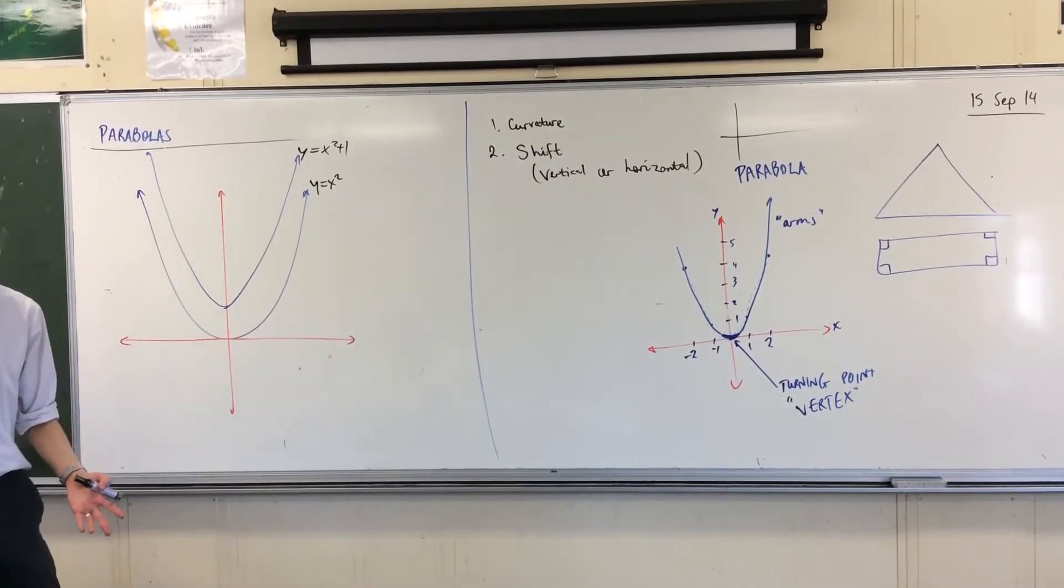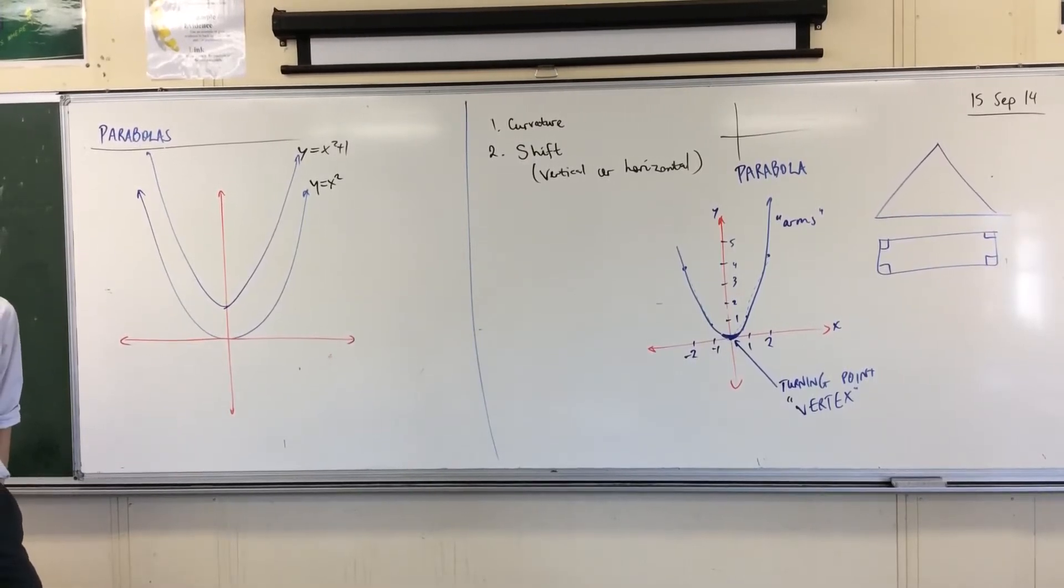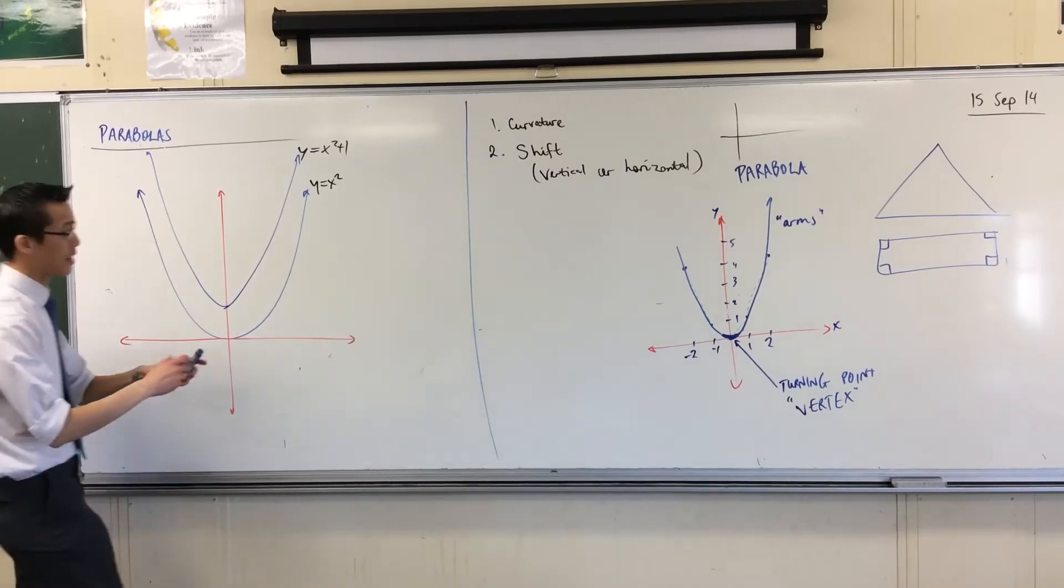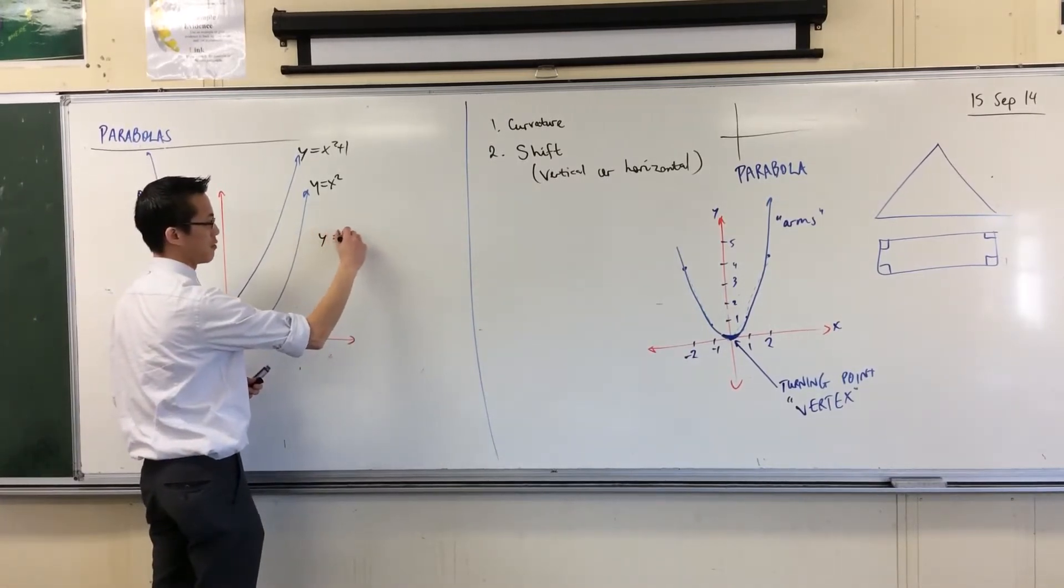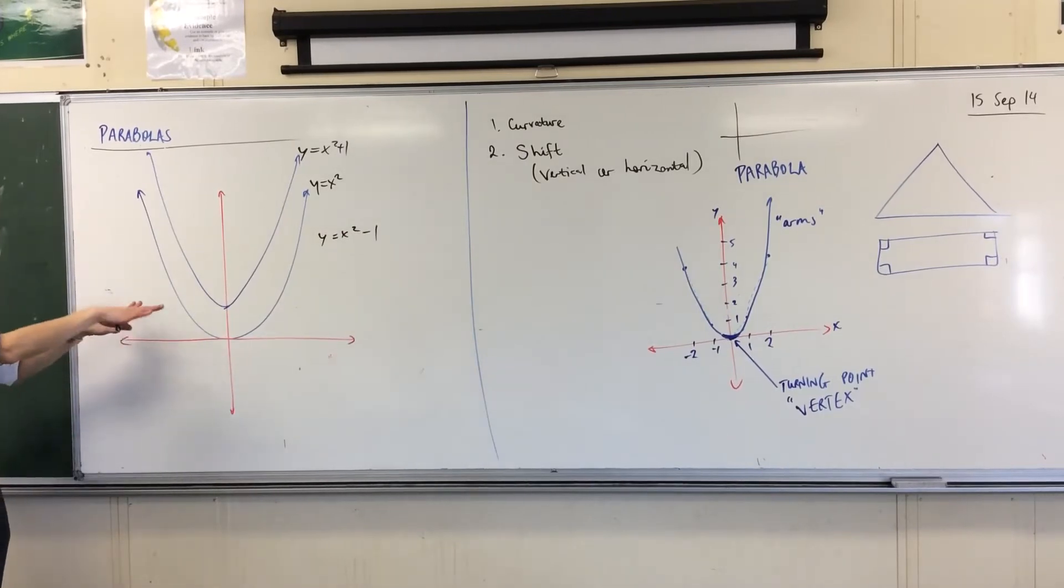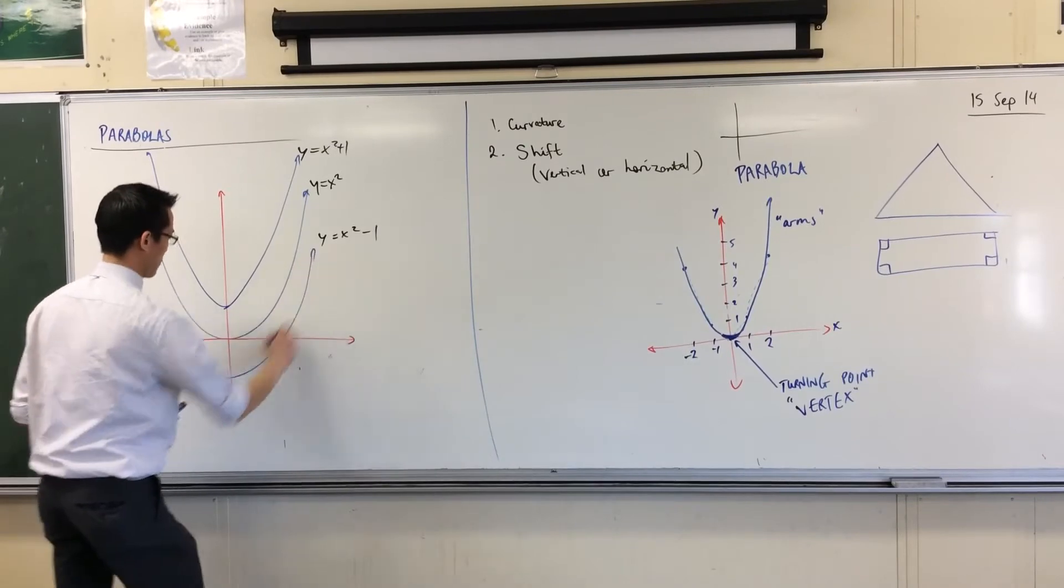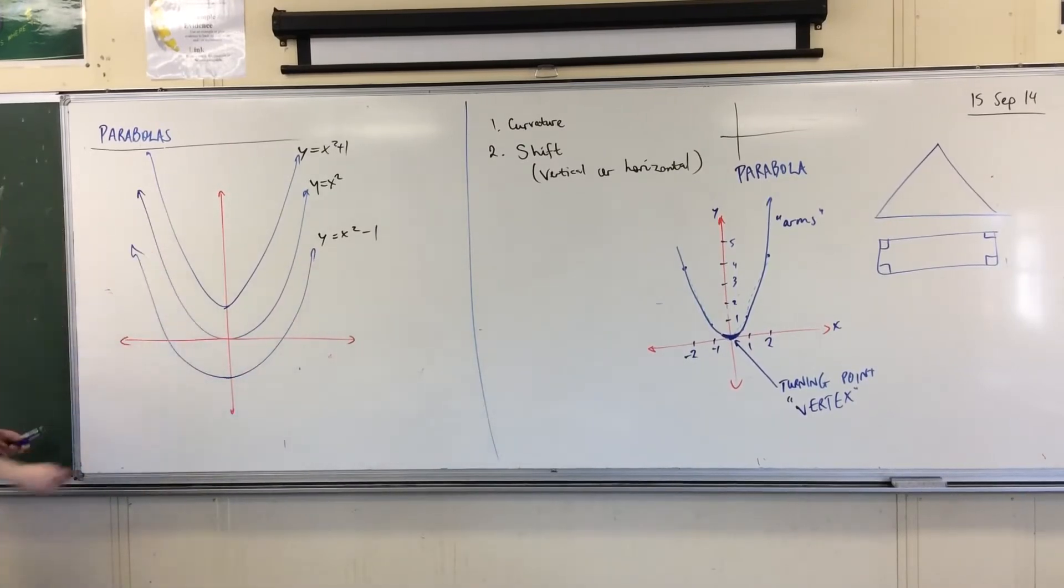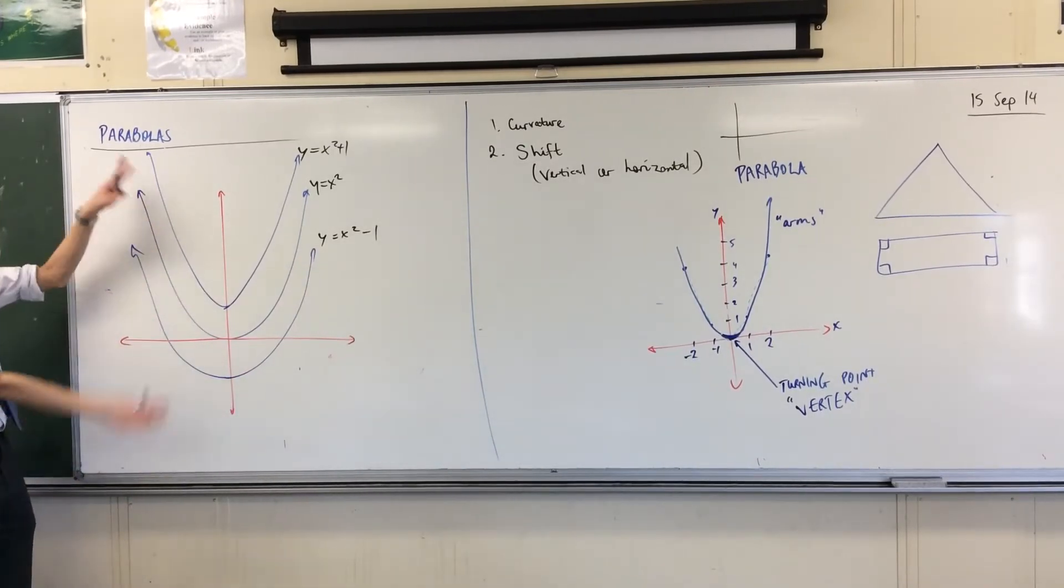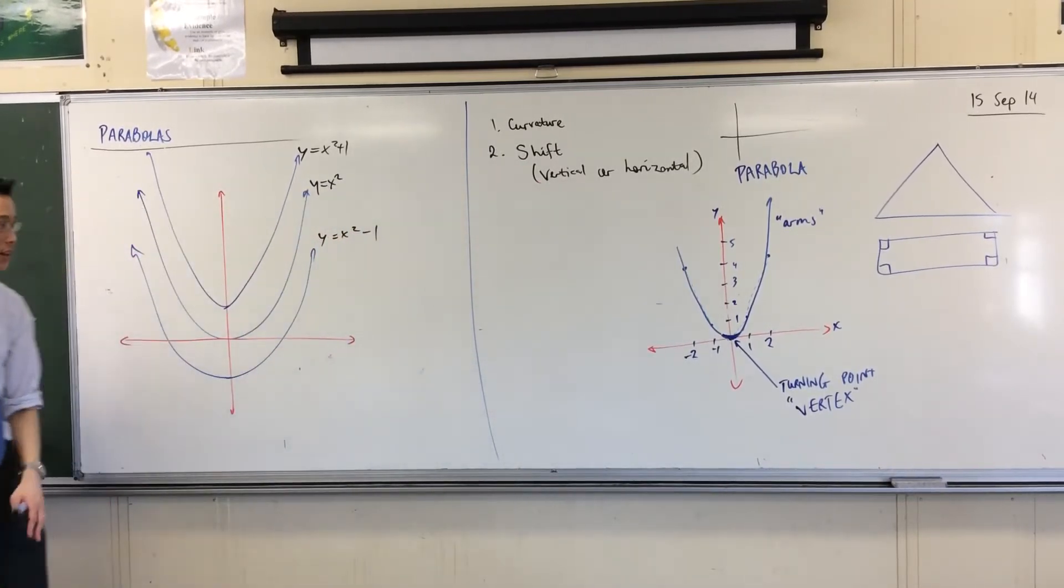I can move it downward as well. How would I do that? Instead of going x squared plus 1, how would I move it downward? x squared minus 1? Yeah, good. Perfect. So I might draw it like this. Exactly the same shape, but moved downward. So something like this. Okay, like so. So you've got a whole family. Now this is a vertical shift. I'm just moving it up and down.